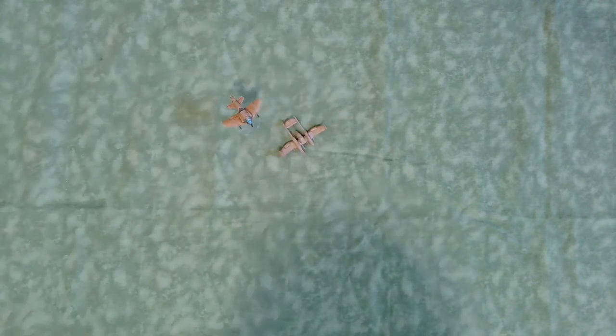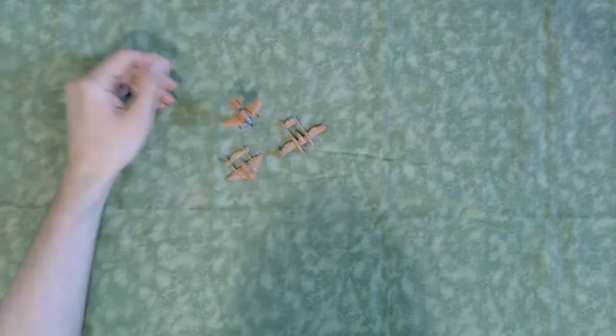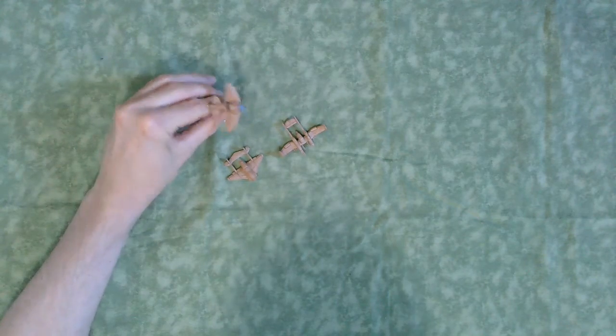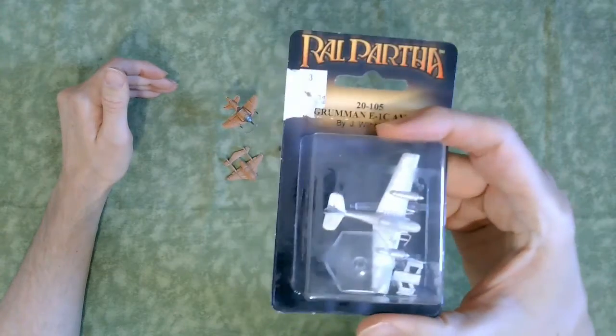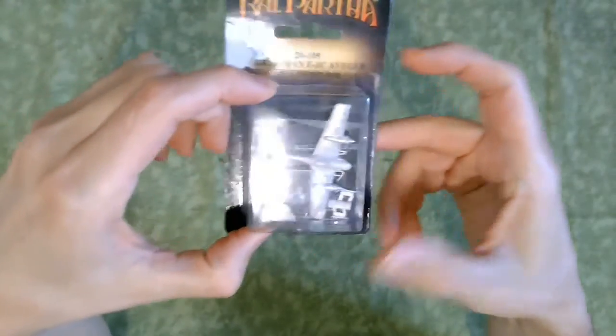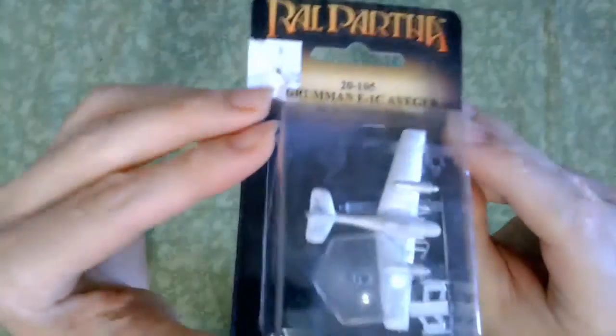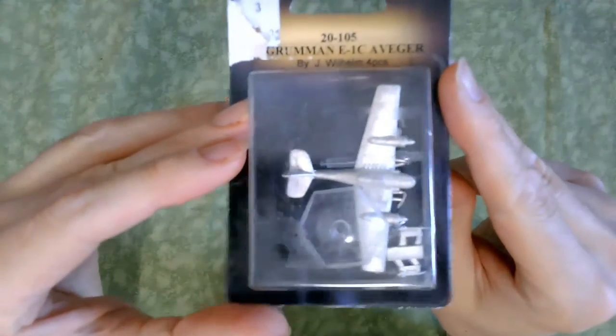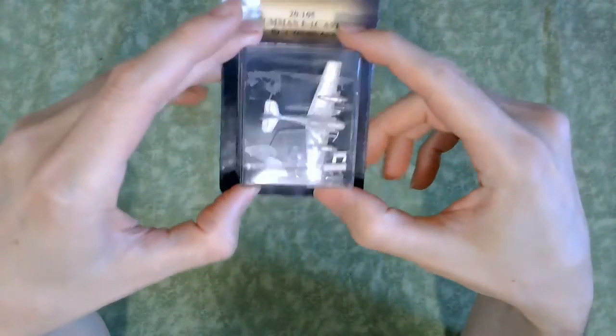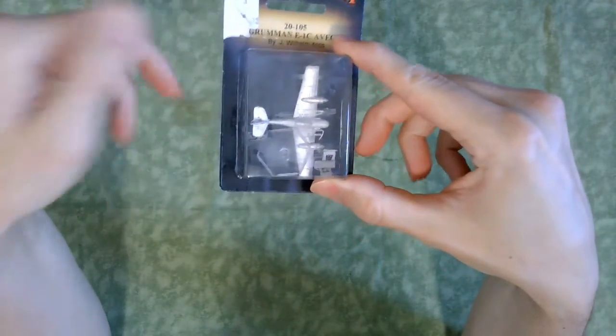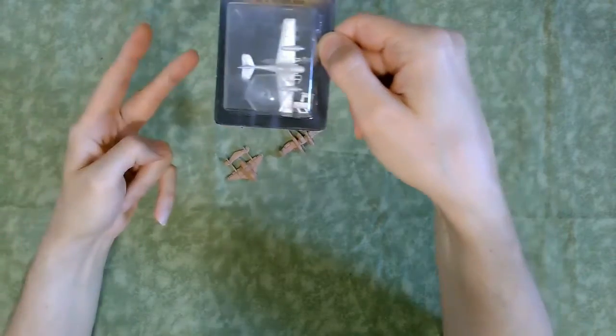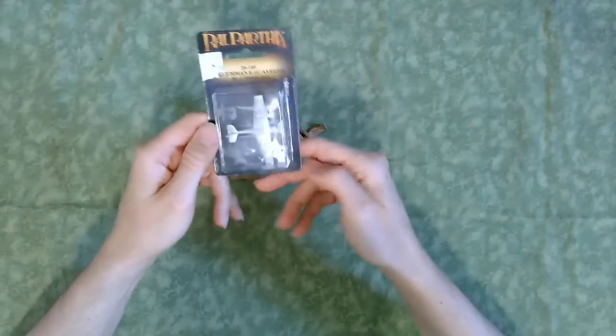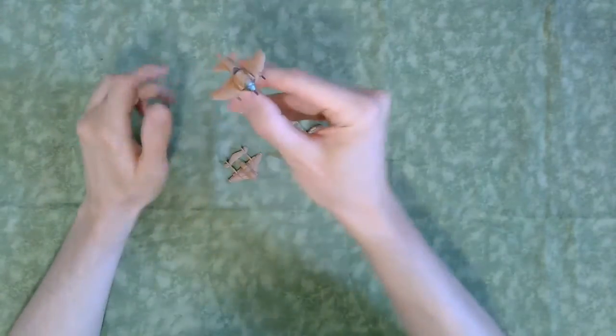I'm going to talk a little bit about the miniatures for Crimson Skies. And you can tell I haven't really painted them. I've just started getting them out of their boxes and getting them going. They usually will come in an Iron Wind blister. This says Ralpartha, but it's actually from Iron Wind. It's also misspelled. You see it says AVEGAR instead of Avenger. But they'll get one to a blister. And these will cost between like $8 and $12 nowadays. You don't want to buy too many of them anyway. I mean, the game is designed for two planes on one side and two planes on the other.